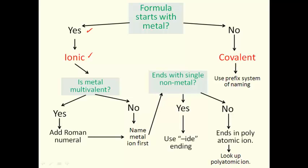The next thing to check for is, is it multivalent? If it's multivalent, you'll need to use Roman numerals. If it's not multivalent, simply name the metal ion first.